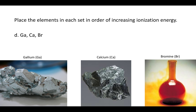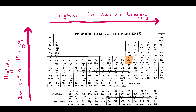What if you had gallium, calcium, and bromine? Gallium is there, calcium there, and then bromine here. Because calcium is the furthest to the left, it's going to have the lowest ionization energy. Because bromine is the furthest to the right, it's going to have the highest ionization energy.